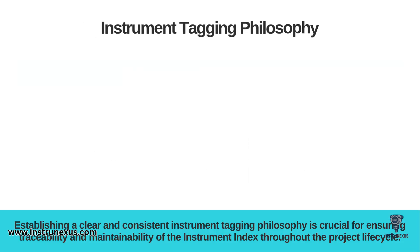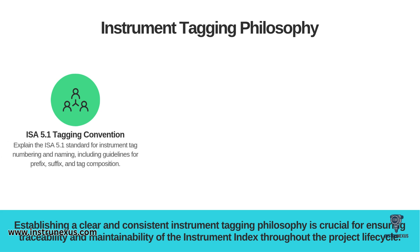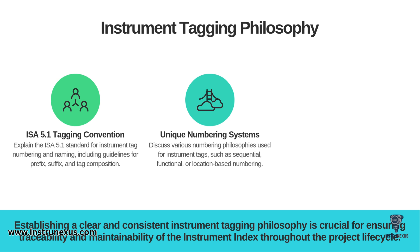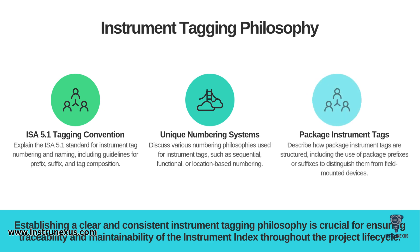A key part of the index and the project specification is the instrument tagging philosophy. You can't just make up tag numbers. The most common standard you'll use is the ISA 5.1 tagging convention, which provides clear guidelines for how to compose a tag — including its prefix for the measured variable, its suffix, and its functional identification. Within that standard, projects might adopt different numbering systems: sequential, functional, or location-based. A special challenge is package instrument tags — instruments that come on vendor skids — where you need a clear philosophy, often by adding a package prefix or suffix to distinguish them from field-mounted devices.